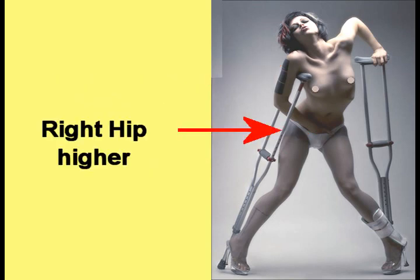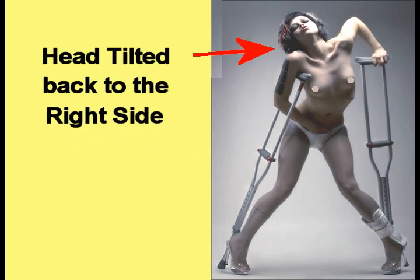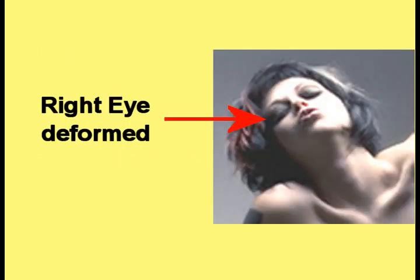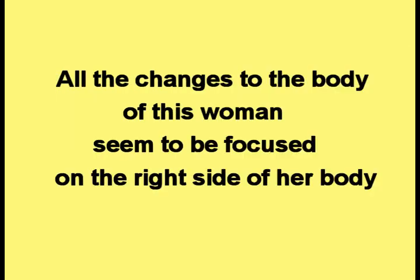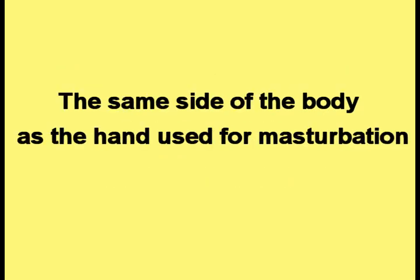Her right hip is higher than the left hip. Her head tilts back to the right side, and her right eye looks deformed. All of the changes to the body of this woman seem to be focused on the right side — the same side of the body as the hand used for masturbation.